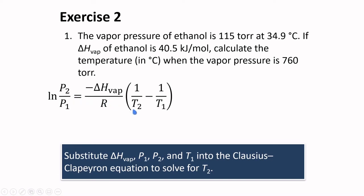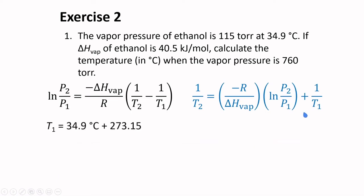What is required is T2. If we rearrange this equation such that this term here is placed on the left side, we will get this new relationship. T1 is in degree Celsius, so we need to convert it to Kelvin. Just add 273.15 to that value, and we will get 308.0 Kelvin.